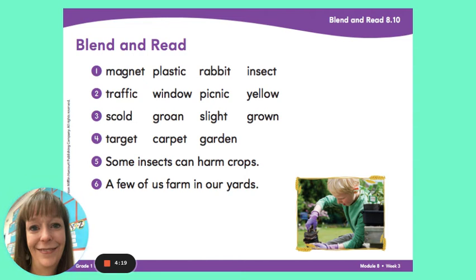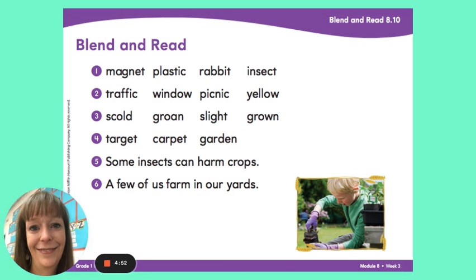Let's look at the words in line four. Read them with me now. Target. Carpet. Garden. As we read these words, once again I notice that they all have two syllables. When I'm looking at longer words, it's easier to sound them out if I look at the first syllable. Like in target, the first syllable is tar. So if I can get tar sounded out, then I can sound out get, and I can put them together and make the word target.